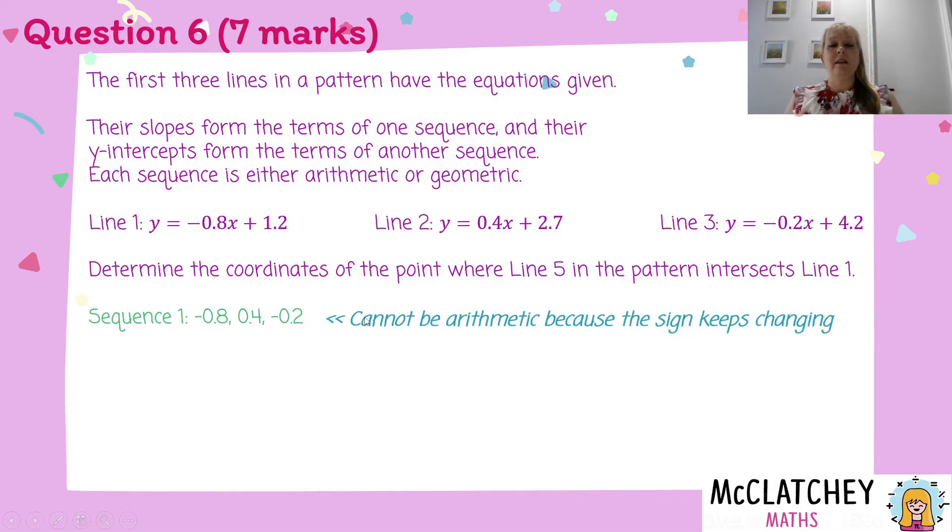Now we know from looking at this, it goes negative, then positive, then negative again. And because the sign keeps changing directions, we know it can't be an arithmetic sequence. It's got to be a geometric sequence.